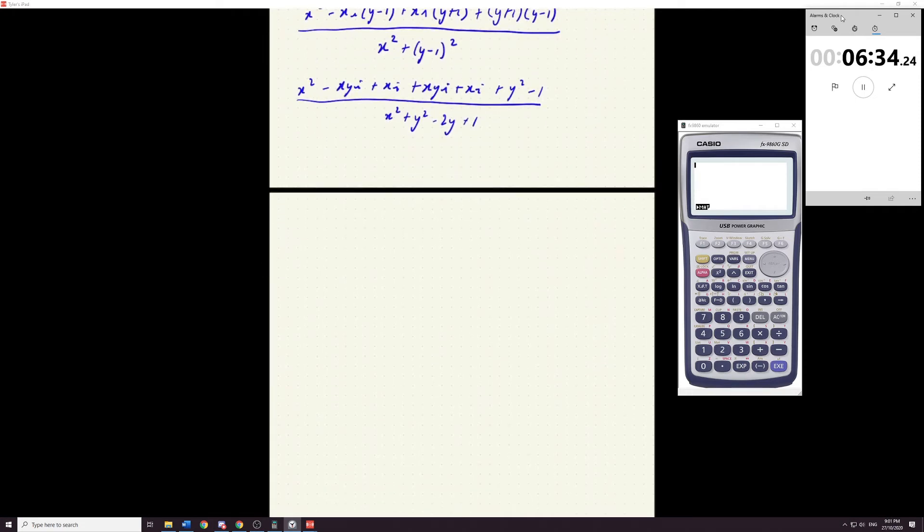Let's see where this ends up. I'm going to drop down a page here. X squared. We've got minus x, y. These two cancel. The next two combine. So plus x, i. Well this is plus two x, i. Two x, i. Plus y squared. Minus one. X squared. Plus y squared. Minus two y. Plus one. Cool.